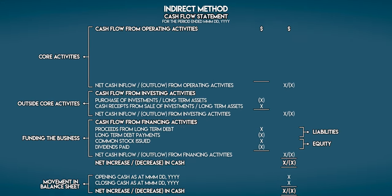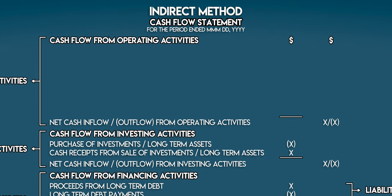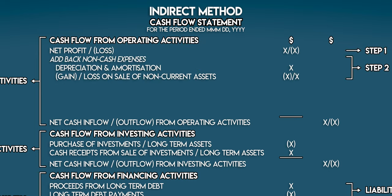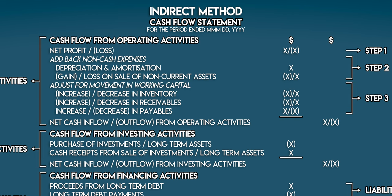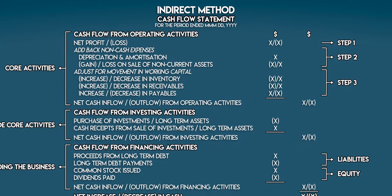Now how does the indirect method work? The only section that changes is cash flow from operating activities — we use three steps to work it out. The indirect method always begins with the net profit or loss from the income statement. Then in step two we add back all the non-cash expenses that appear above it, as these don't represent cash outflows and need to be reversed out. The usual suspects are depreciation and amortization, and any gain or loss on the sale of non-current assets. Finally, we adjust for the movement in working capital. Working capital is the difference between current assets and current liabilities. Increases in current assets like inventory or receivables reduce cash flow, whereas increases in current liabilities like payables increase cash flow. You can find all of these numbers on the comparative balance sheet.